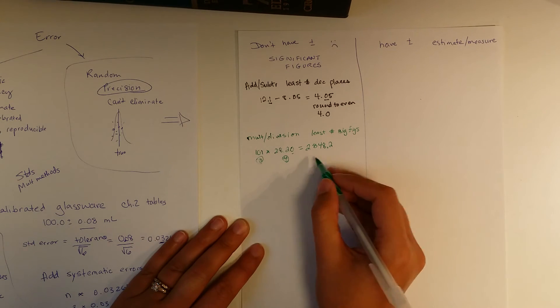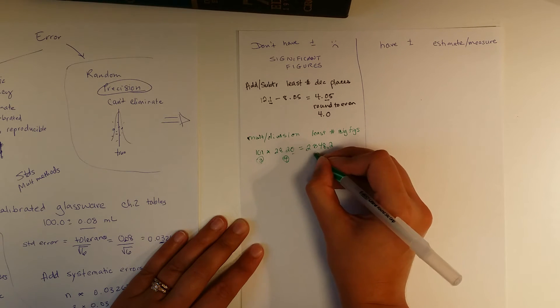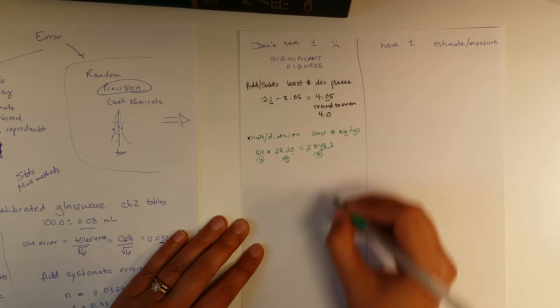So in the result, we should have, well, three is smaller than four, we should have three sig figs, which is one, two, three, we should round to that place. So this becomes 2850.